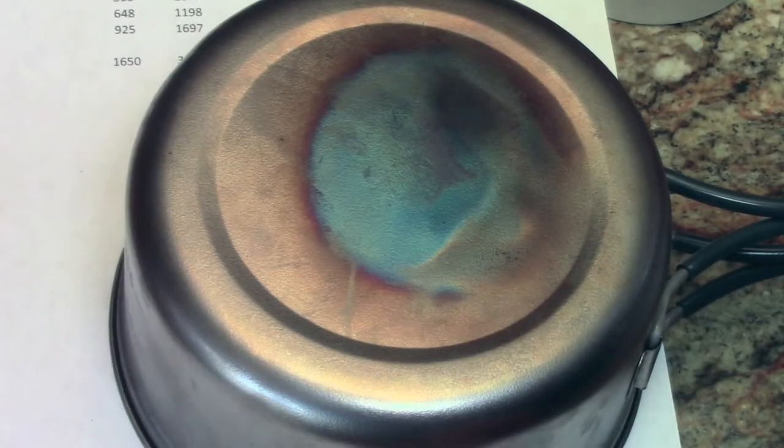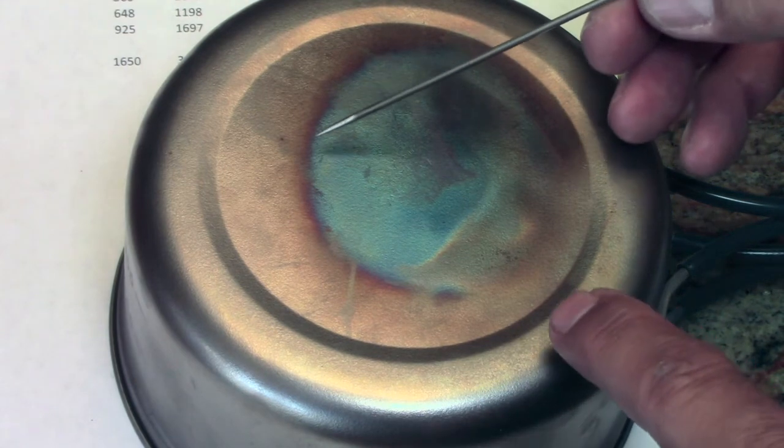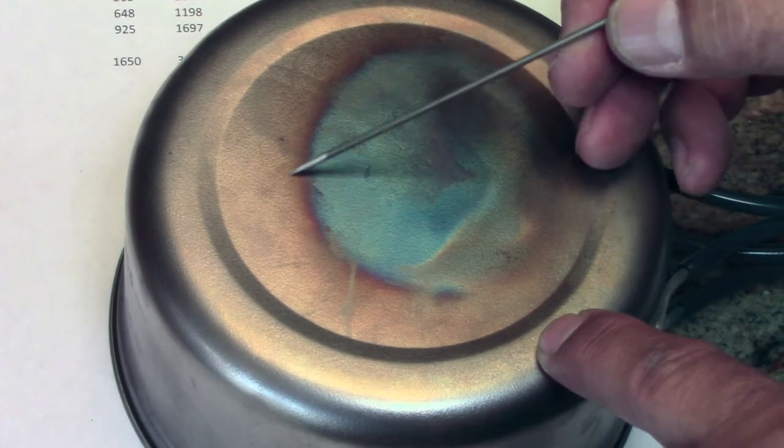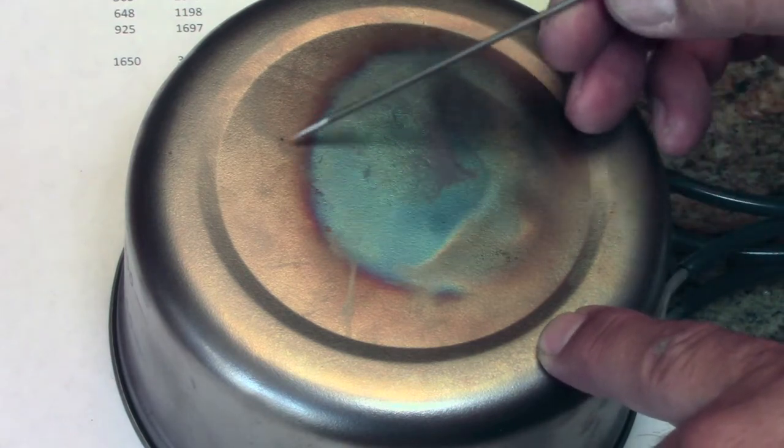So here's a newer titanium pot. And you can see I've got a little bit of that yellowish color here. That means that this zone at one time got up to 725F.